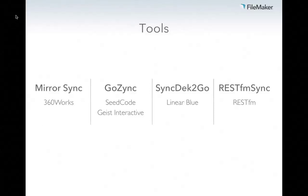SyncDeck to Go is built upon the SyncDeck platform that's been around for years — this is the new version that works specifically on mobile as well. REST FM Sync is doing a lot of great things, very similar to Mirror Sync in trying to sync all of your data, but you do get some choices. Both SyncDeck and REST FM give you a lot of fine-grained tools in how you want to do it. They're very big developer tools, and if you want to roll your own sync in specific ways, you can do that really easily with both of those tools.